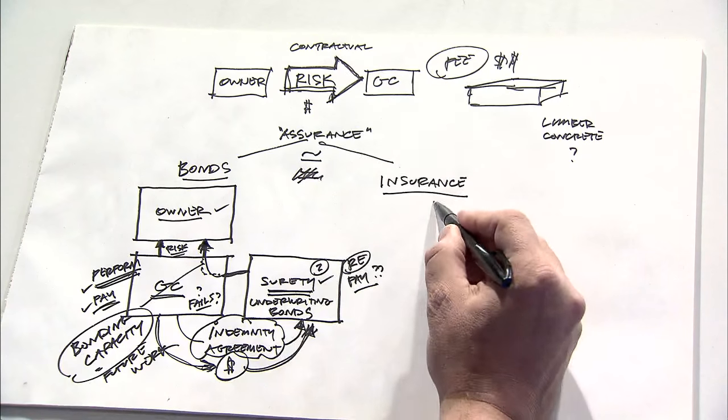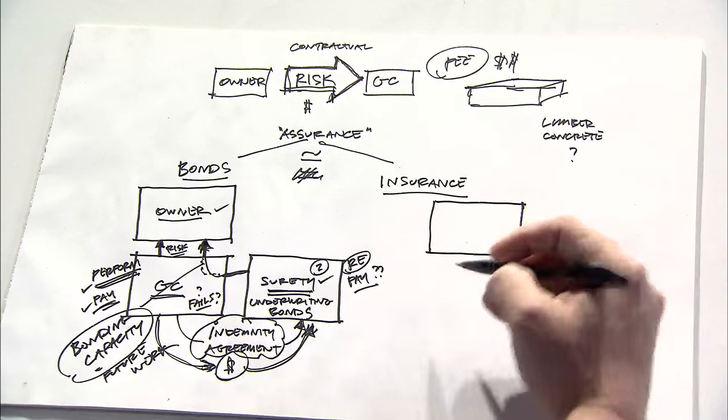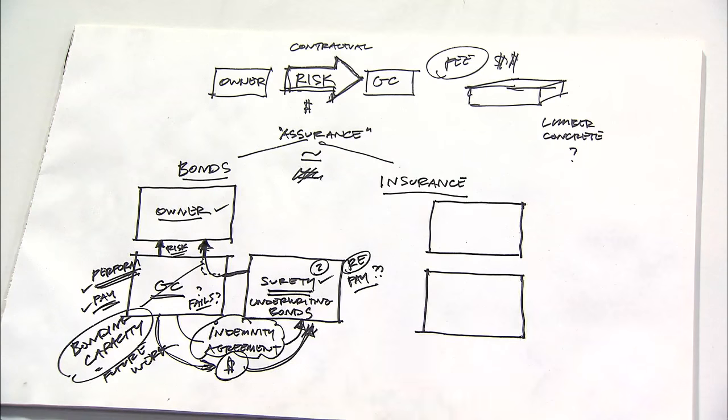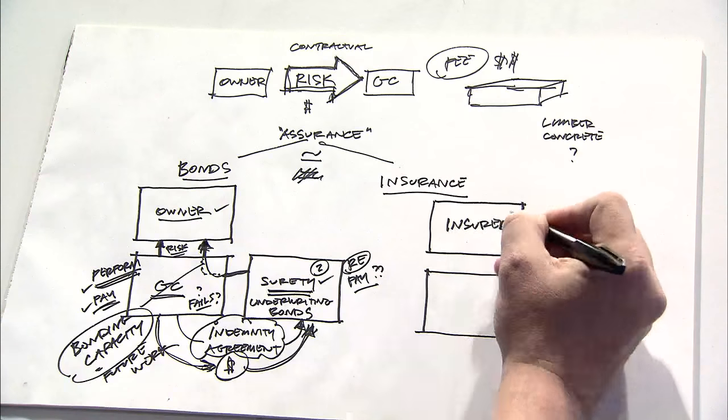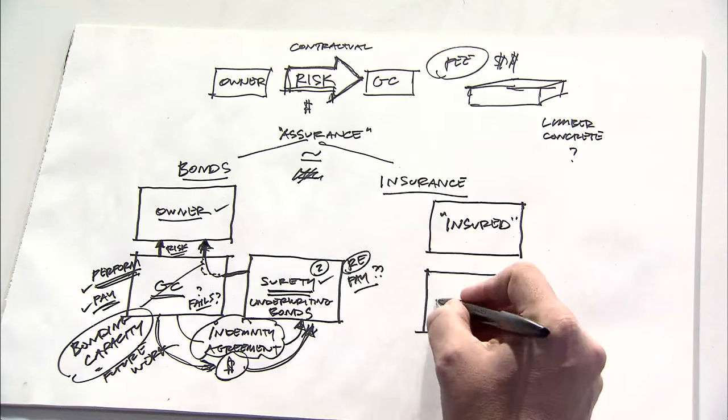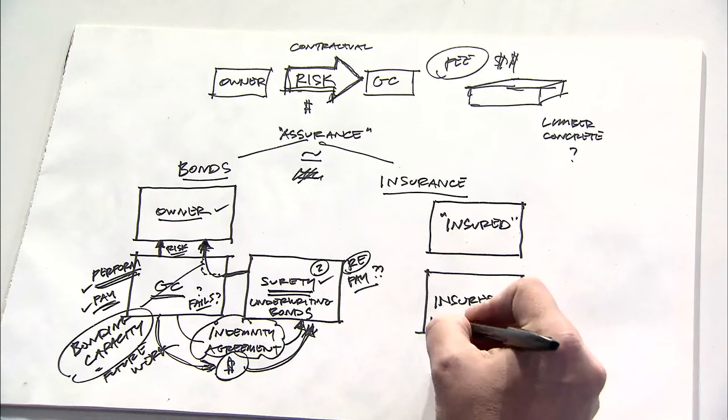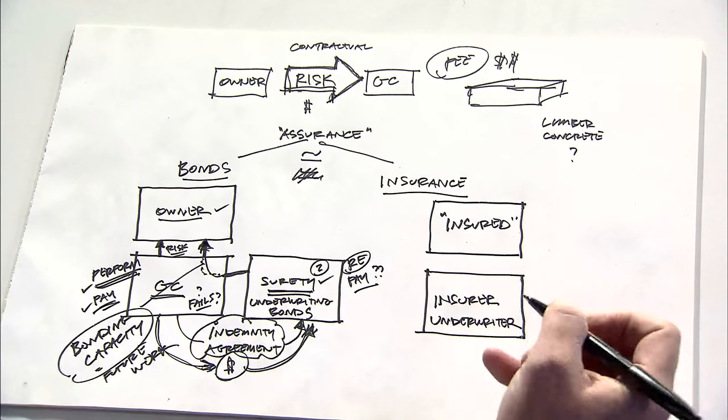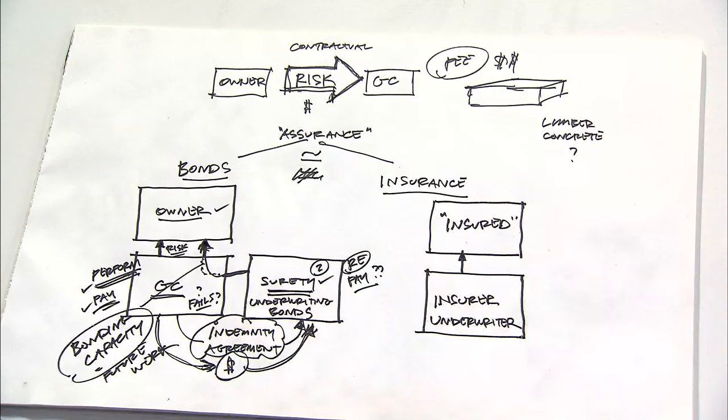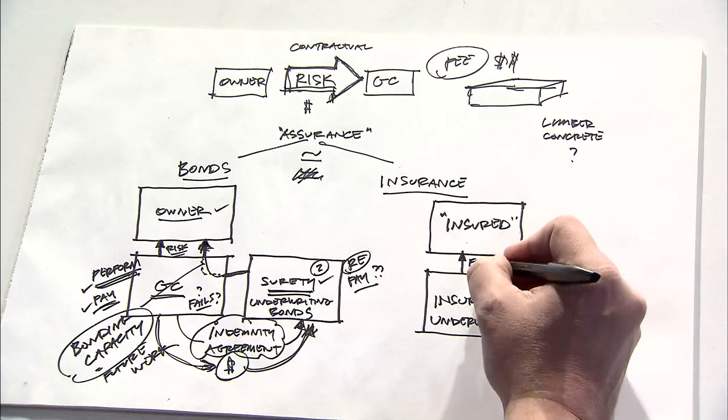Now, fundamentally on the insurance side, this is a two-party arrangement, including one who would like to be insured against some type of risk, and then someone else, an insurer or sometimes called an underwriter, would agree to provide insurance coverage to the person who desires coverage, again, in exchange for a premium or fee.